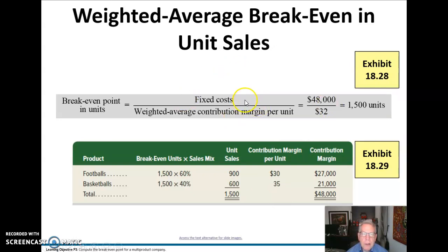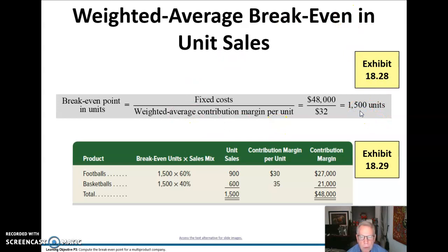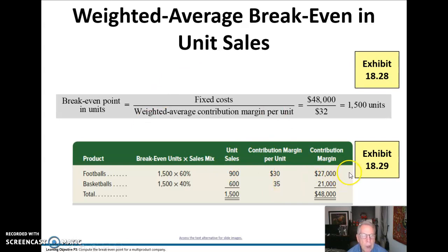Now we take our fixed costs, which in this example was $48,000, and divide that by the $32 weighted average contribution margin per unit that we just calculated. That gives us 1,500 units. We take this 1,500 units, multiply it by 60%, and our unit sales of footballs are going to be 900 units, and basketballs are going to be 600 units. Multiplying through by the individual contribution margins of $30 and $35, we get total contribution margin for footballs and basketballs totaling $48,000.